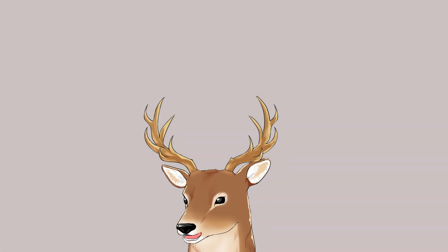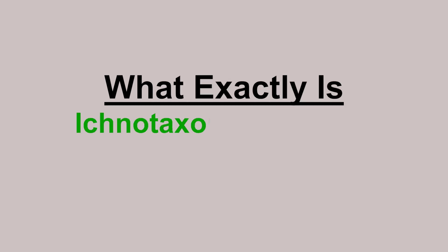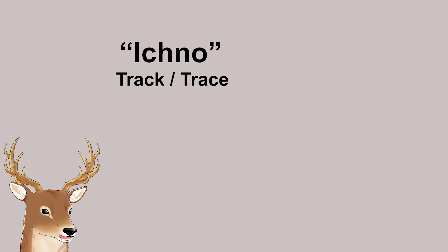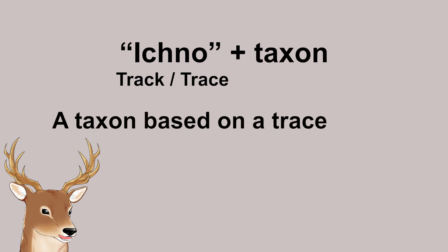Let me raise the question: what exactly is ichnotaxon and ootaxon? Let's talk about ichnotaxon first. Ichno means track or trace. So, ichnotaxon means a taxon based on a trace of an organism — more specifically, a taxon based on a trace fossil.